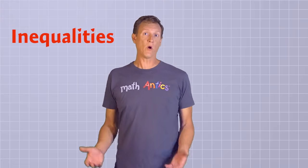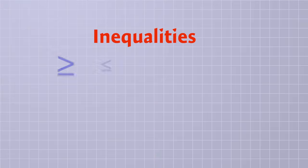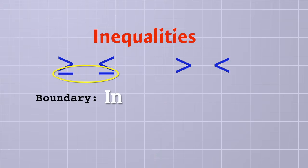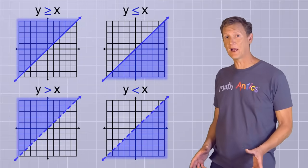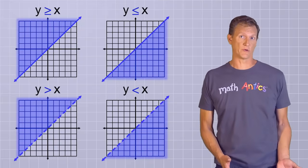Fortunately, the rules for inequalities are easy to remember. If the inequality includes the equal sign, then the boundary line is in the solution set, and you graph it with a solid line. But if it does not include the equal sign, then you draw a dashed line to show that the boundary line is not in the solution set.